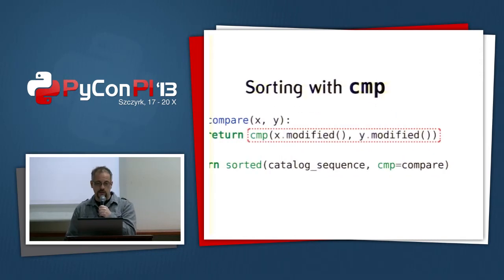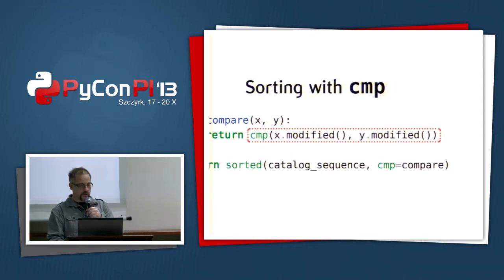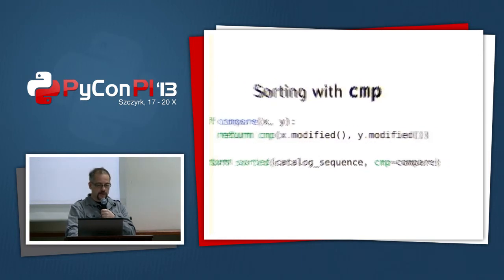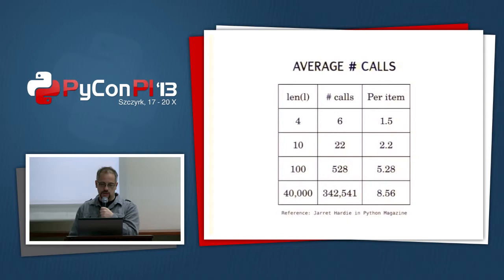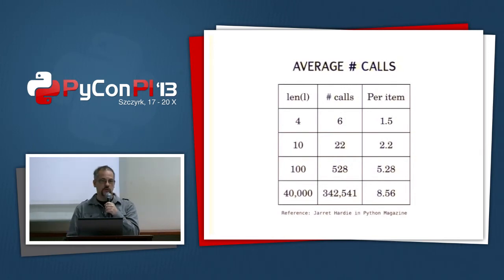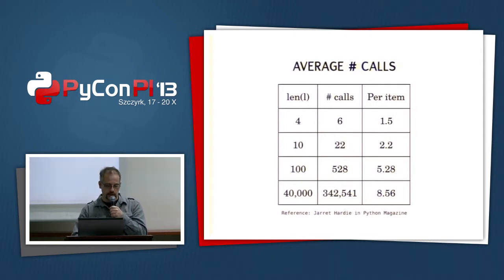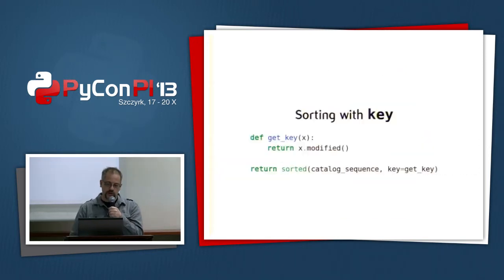The refactored code is much smoother, shorter, and easier. What it does is compare two values and sort them on modified dates. The comparison method compares pairs of objects, and the longer the list is, the more pairs are possible. From an old issue of Python Magazine, if you have 40,000 items in the list you get an average of 342,000 calls to the comparison method — about 8.5 calls per item.